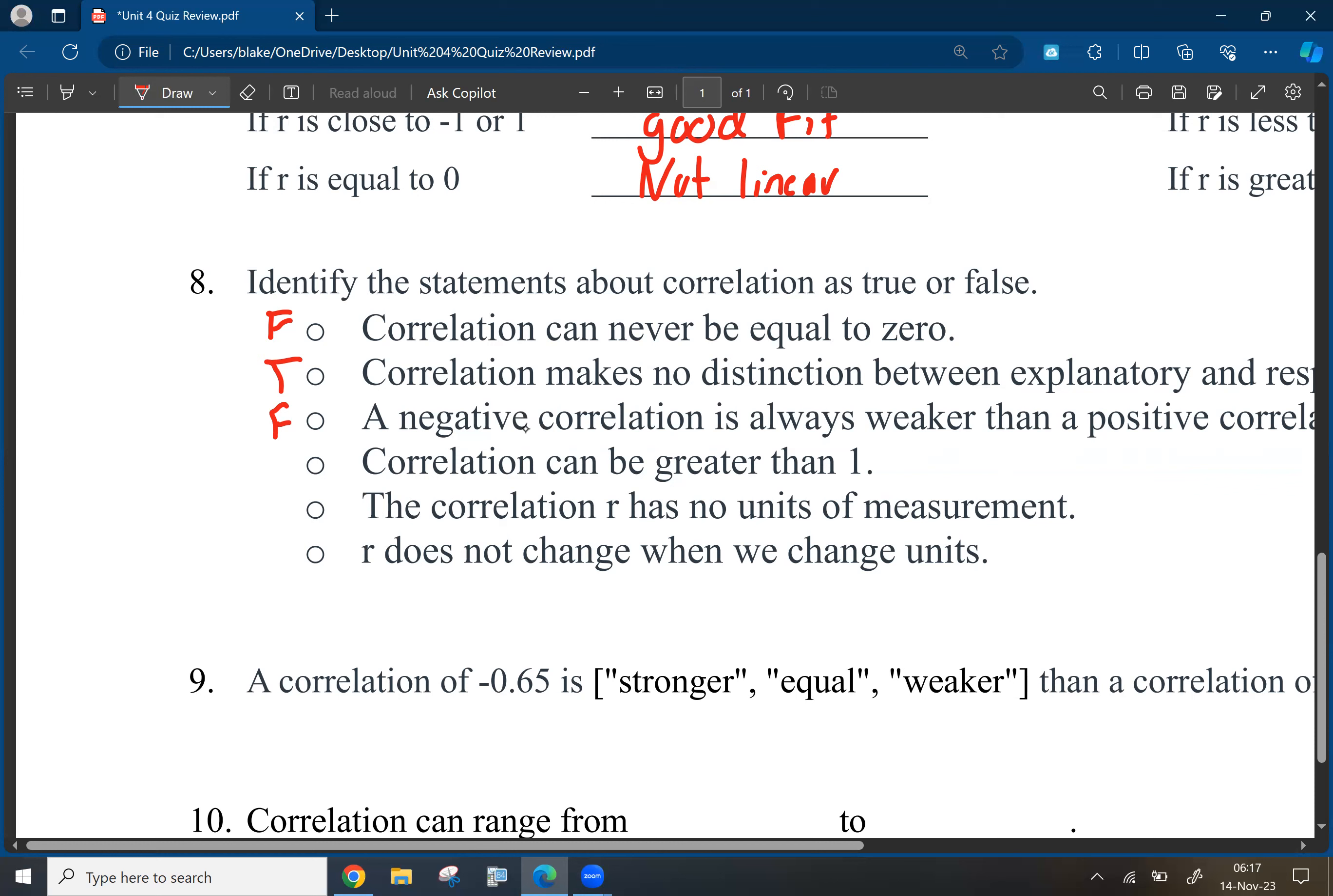Correlation can be greater than one. That is false as well. It can only go between negative one and positive one. So, you can't have that. Correlation R has no units of measure. That is true. Correlation does not use units.